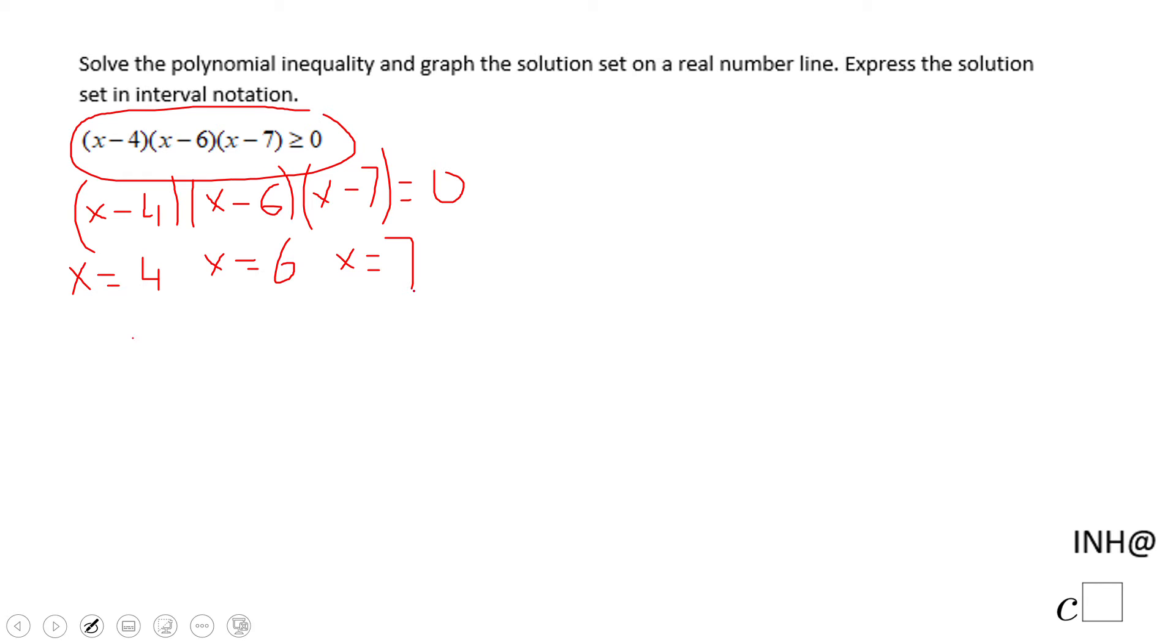These are the three moments for this polynomial function, which I'm going to call p(x). It's equal to zero: 4, 6, and 7. Zero, zero, zero.